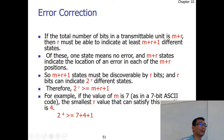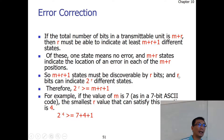One state means no error. M plus R states indicate the location of the error in each of the M plus R positions. So M plus R plus one states must be discoverable by R bits, and R bits can indicate 2 to the power of R states. Therefore, 2 to the power of R must be greater than M plus R plus one.